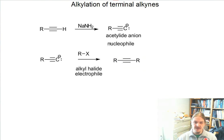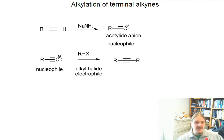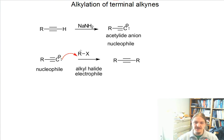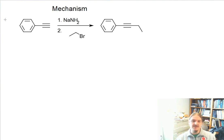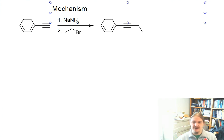Here we have our acetylide anion nucleophile and our alkyl halide electrophile. They react together. Just as a general reminder, nucleophiles attack electrophiles. Let me show you the mechanism of an example reaction, where instead of having generic hydrocarbon groups, I've got specific compounds. Here we're reacting phenylacetylene with sodium hydride as a base, and then with bromoethane as an electrophile.